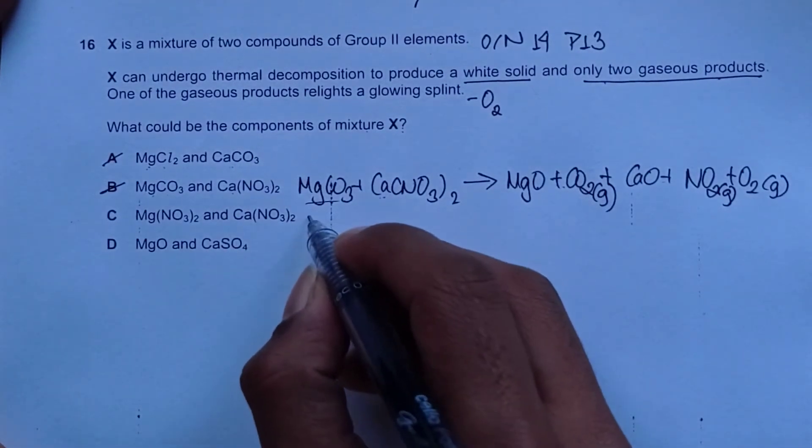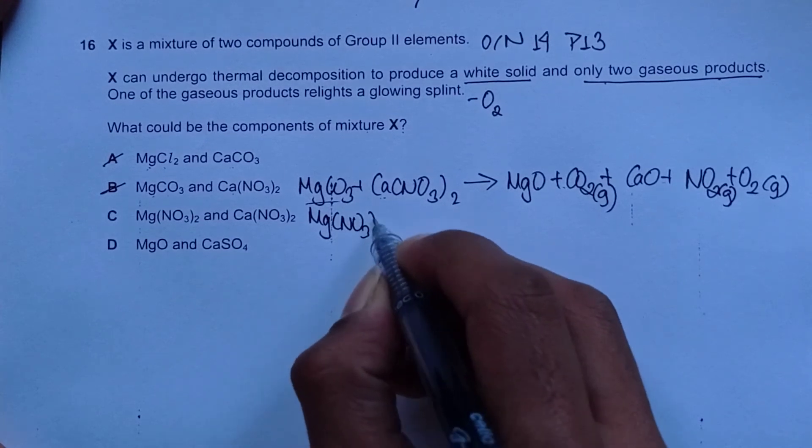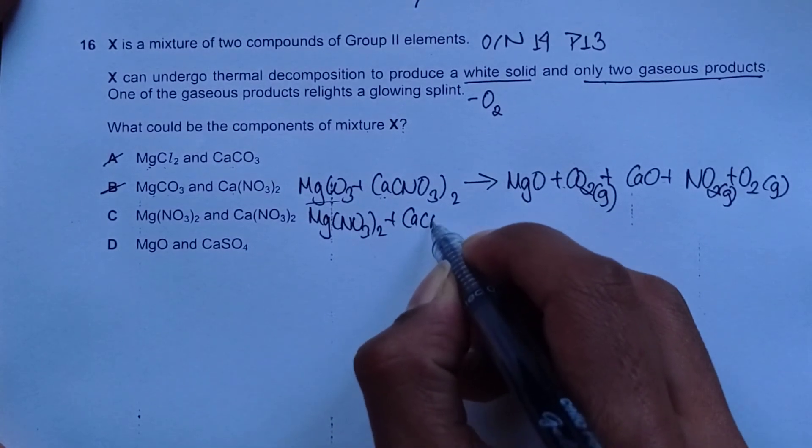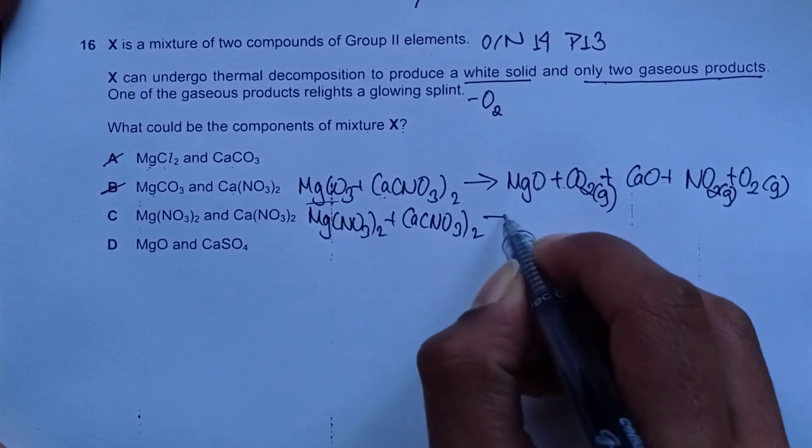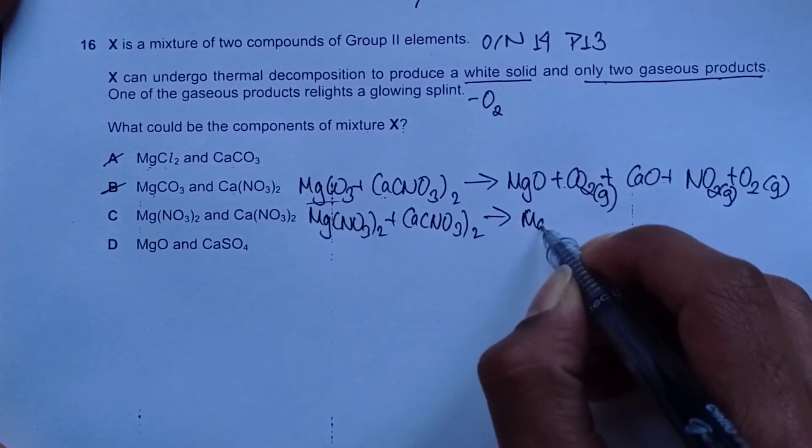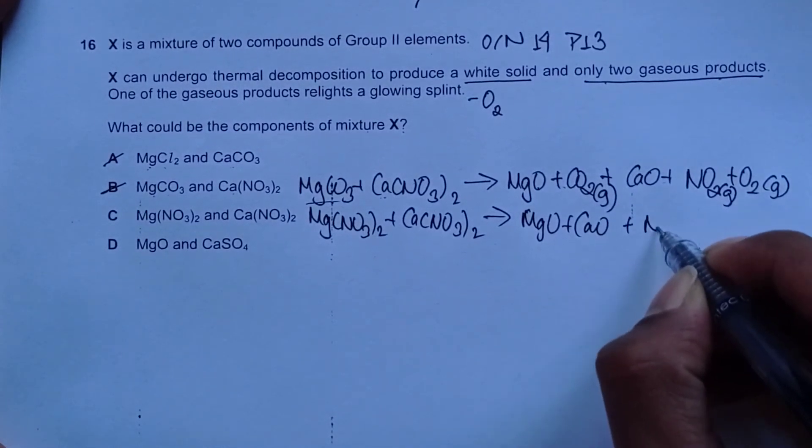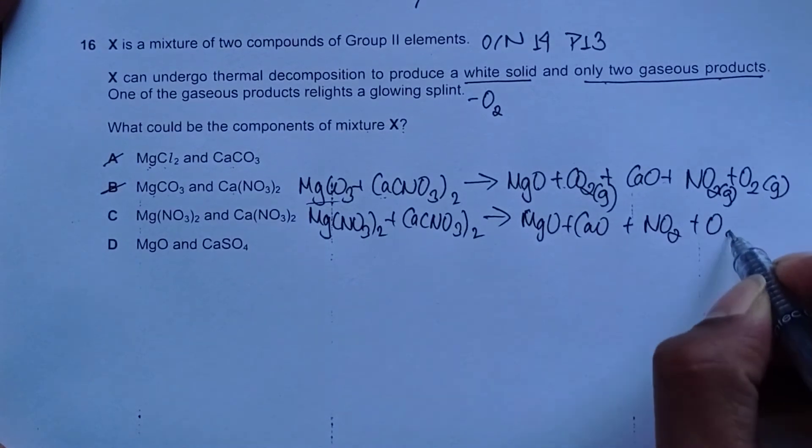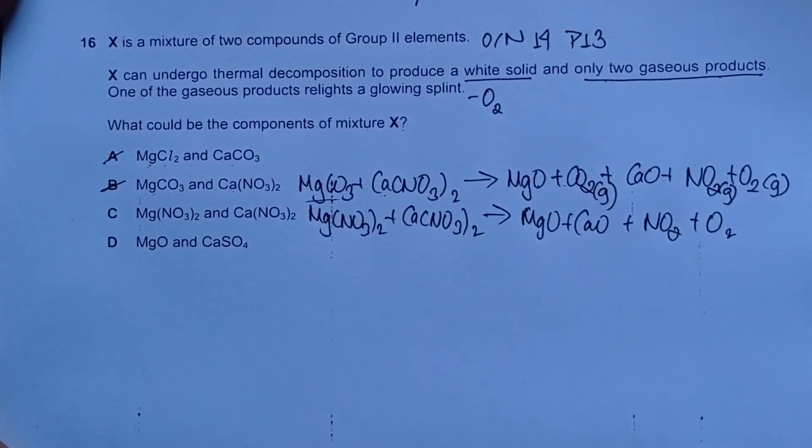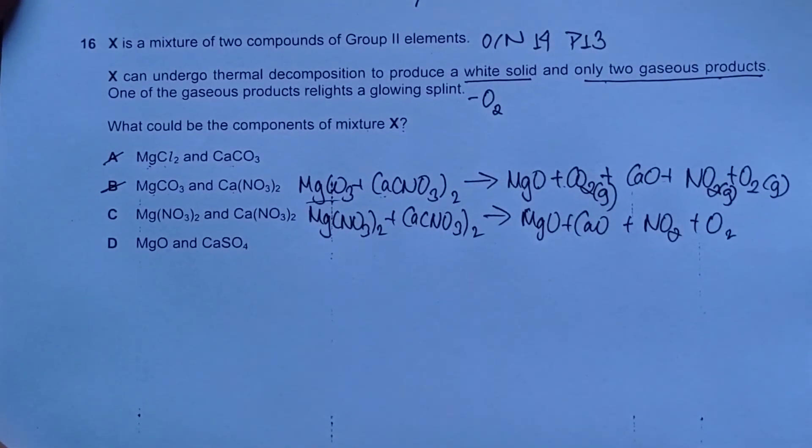For choice C, we will have Mg(NO3)2 plus Ca(NO3)2. This will give us MgO plus CaO plus NO2 and O2. It's not necessary to balance the equation.